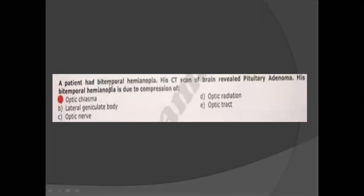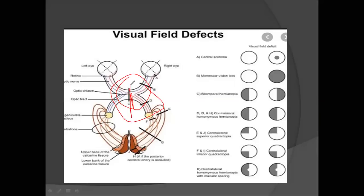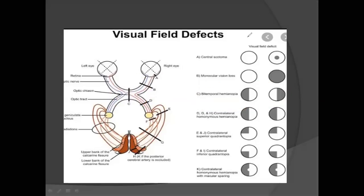A patient had bitemporal hemianopia. This is a very important MCQ, especially in physiology, but it has also appeared in anatomy. If the optic chiasm is damaged, it will result in bitemporal hemianopia. If you have the diagram in your head, you will remember this MCQ easily.